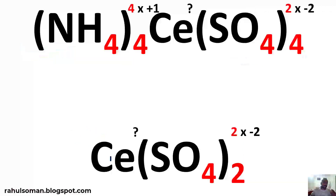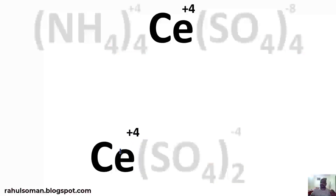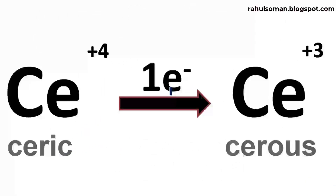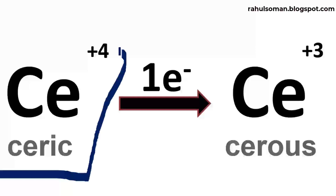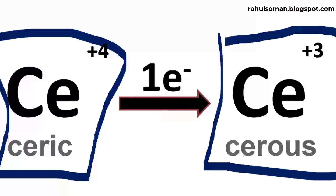Let us find out the oxidation state of cerium metal present in the center. The oxidation state of cerium in ceric sulfate is +4. Upon taking one electron, this ceric metal center converts into its cerous form — that is, Ce(IV) of ceric sulfate converts into its +3 form. So +4 ceric compounds we name as 'ceric' and +3 cerium salts we name as 'cerous'.